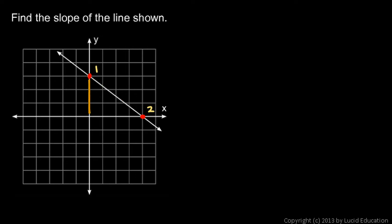As we move from point one to point two, we have a certain vertical change — in this case it's going down — and a certain horizontal change. The vertical change is the rise, and the horizontal change is the run. The rise is defined as how far up you go, so if we're going down, that means the rise is negative. Take note of the fact that the rise here is negative.